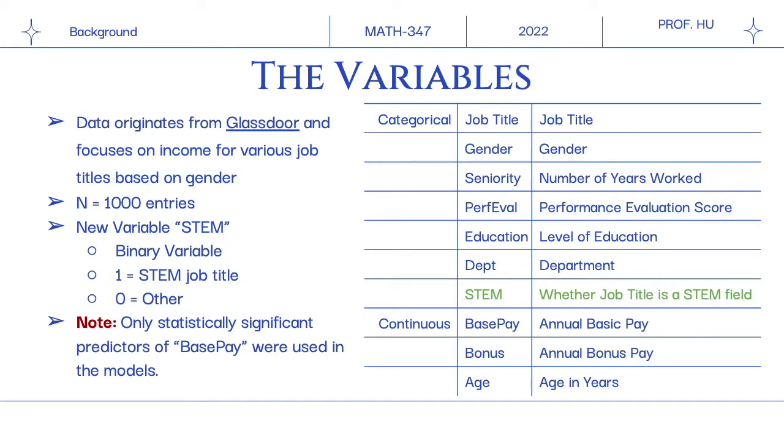The data comes from Glassdoor and includes a thousand cases and nine variables. We created a new variable called STEM to group people based on their job field. In the future, this variable can help determine the depth of the wage gap in figuring whether it is wider in STEM than other fields.